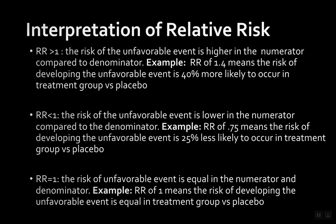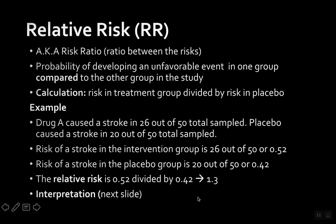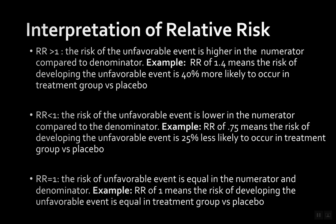Keep in mind that depending on where the intervention group sits in the ratio, the interpretation may change. It's usually better to put the group with the highest risk on top — whether it's the placebo group or the treatment group. When you're interpreting it, you just switch it accordingly. So if the placebo group had the highest risk and you got 1.4, you'd say the risk is 40% more likely to occur in the placebo group versus the treatment group.